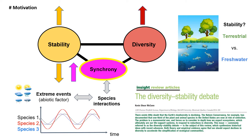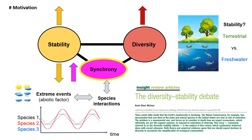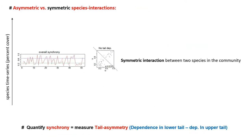My question is how community stability differs across realms and is influenced by these asymmetric interactions. What do we mean by symmetric interactions? Here you can see the red and the blue line representing time series of two species which are fluctuating similarly, so overall synchronous. If you plot the rank of individual time series along the X and Y axis, you will see a scatter plot with positive significant correlation but with no tail dependence.